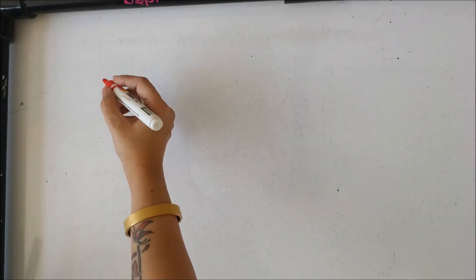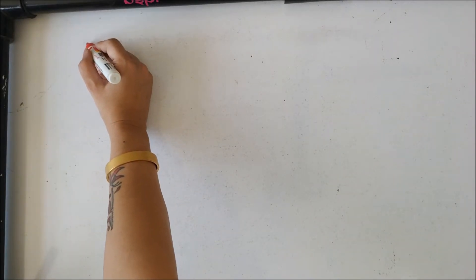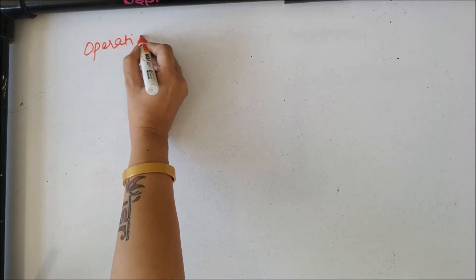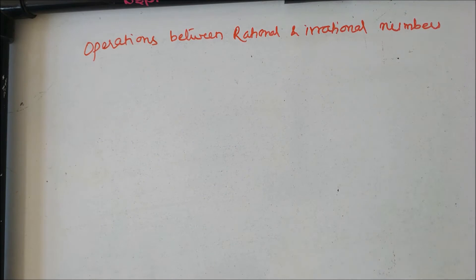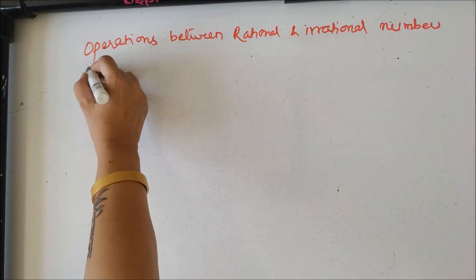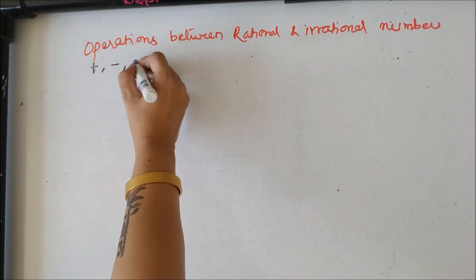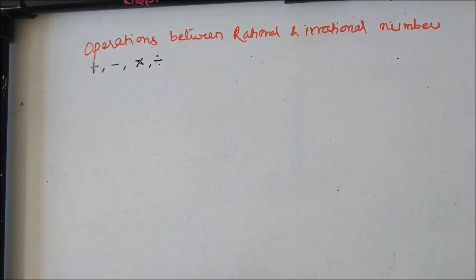In this video, we will look into how to do various operations between rational numbers and irrational numbers. Basically, operations means plus, minus, multiply and divide. We will see how we are going to add two irrational numbers, subtract, multiply and divide, because irrational numbers are new to us.